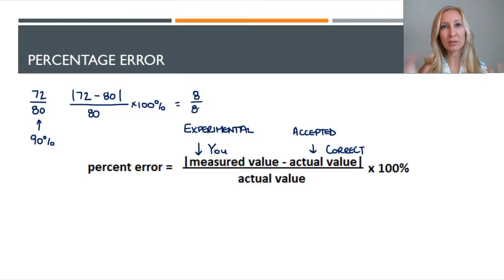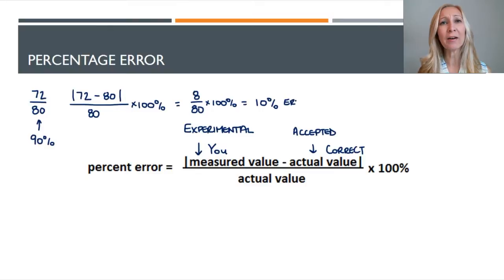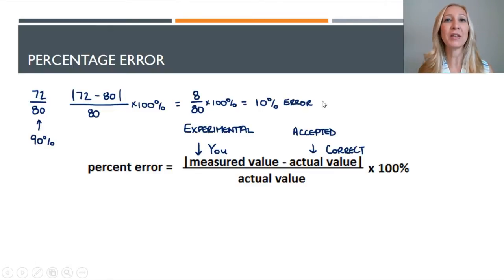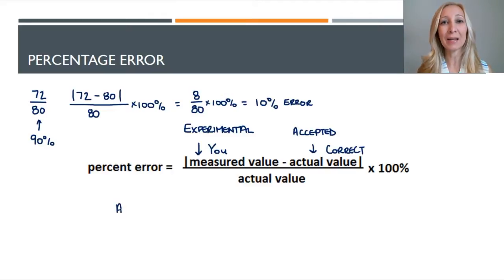We do the subtraction and get 8 over 80 times 100%. Now 8 over 80 is 0.1, and 0.1 times 100% is 10%. So we have 10% error — you were off by 10%. If you got 90% on a test, you were off of that 100% mark, that bullseye, by 10%.